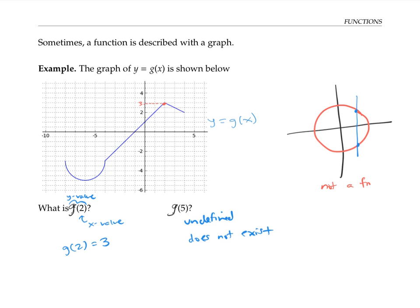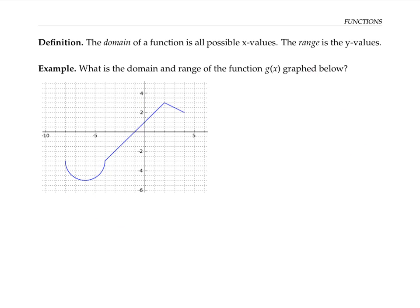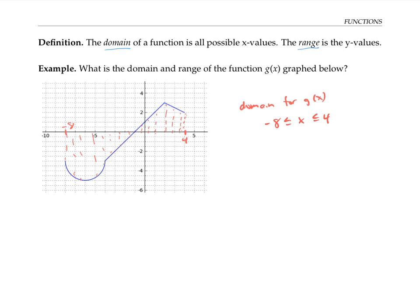The question of what x values and y values make sense for a function leads us to domain and range. The domain of a function is all possible x values that make sense for that function; the range is the y values that make sense. We saw that the x value of five didn't have a corresponding y value, so five is not in the domain of g. To find the domain, we look at the x values corresponding to points on the graph — taking the projection onto the x-axis, we're hitting all x values from negative eight up to four, including those endpoints. So the domain is the interval [−8, 4].